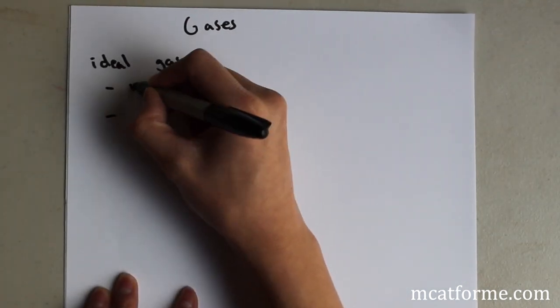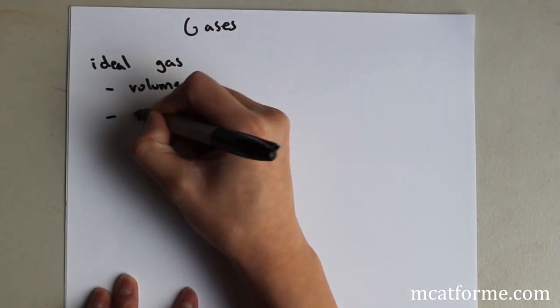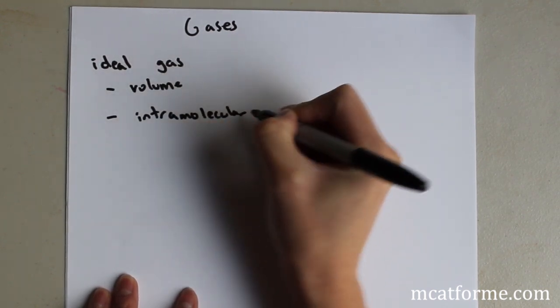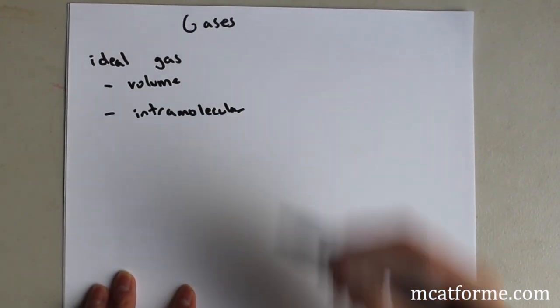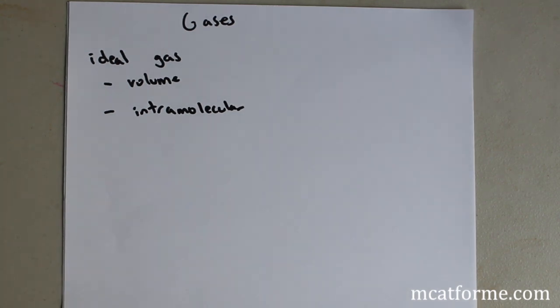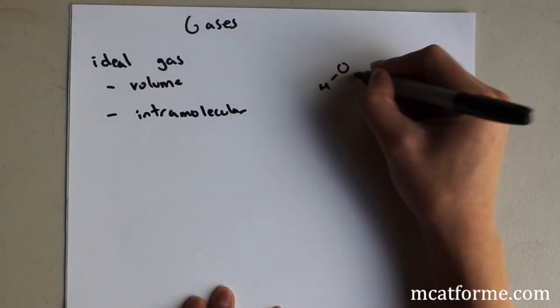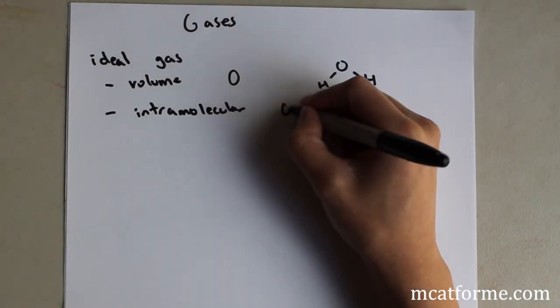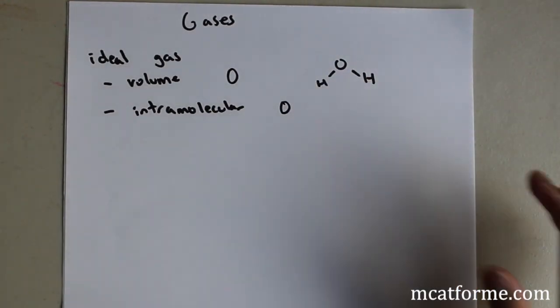So ideal gas, we need to know two properties, and it's with volume and intramolecular forces. So the volume, and this is volume within the actual molecule itself. So within a water vapor molecule, that volume is going to be negligible. So it's going to be zero. Intramolecular forces are also going to be zero. And those are forces between two different water molecules.